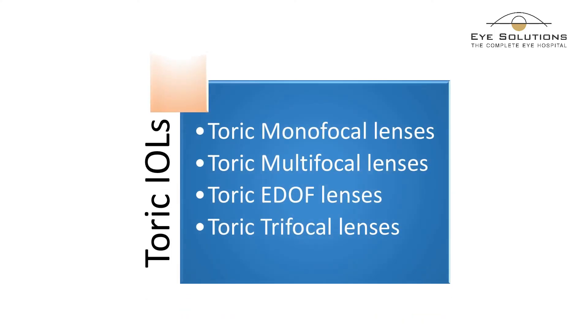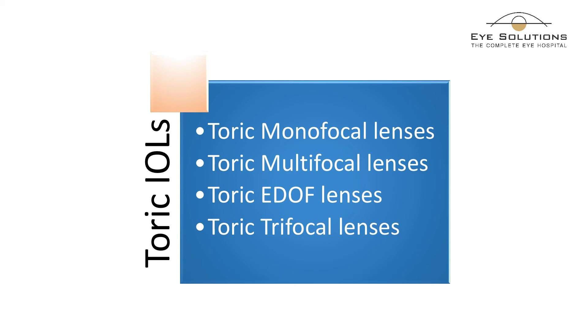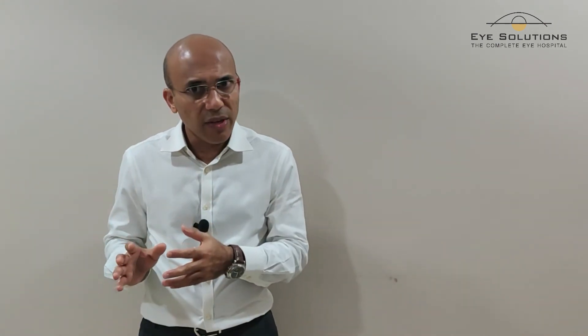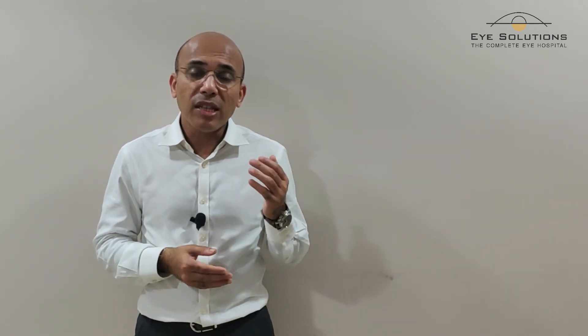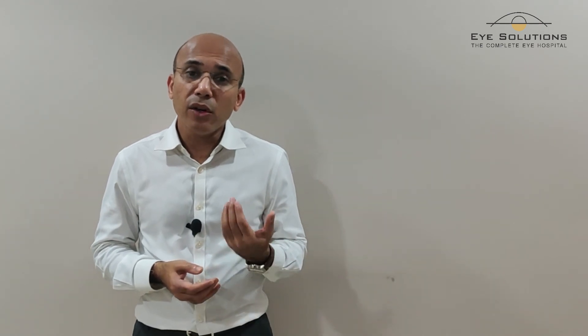Toric lenses are available in monofocal, multifocal, EDOF, and trifocal forms — the same set of lenses as for those who only have a spherical number. The only difference is they are called toric lenses because they take care of the cylindrical number in your eyes.